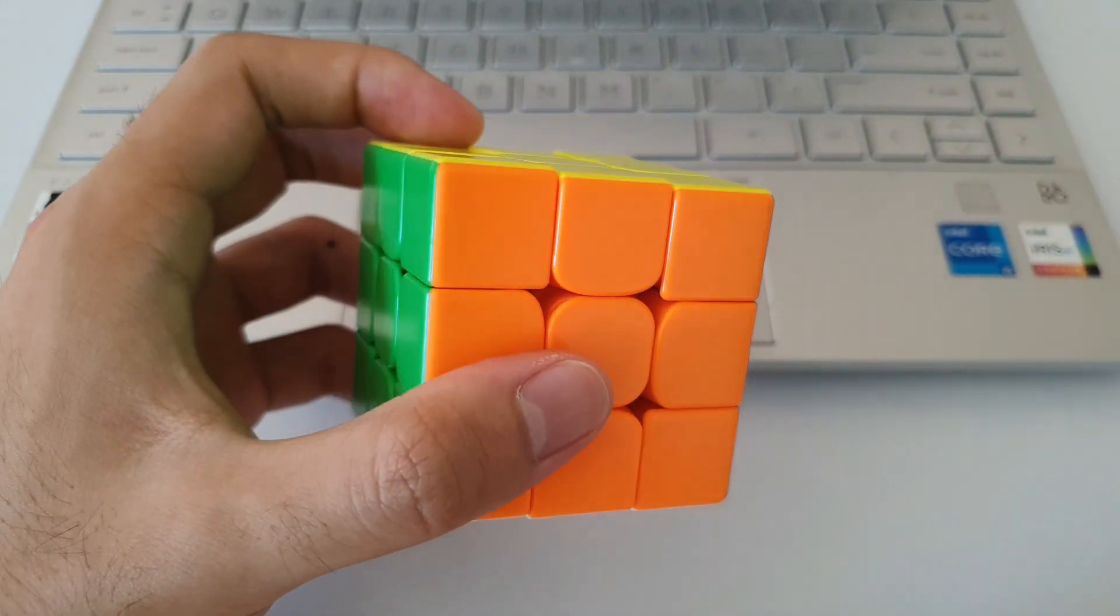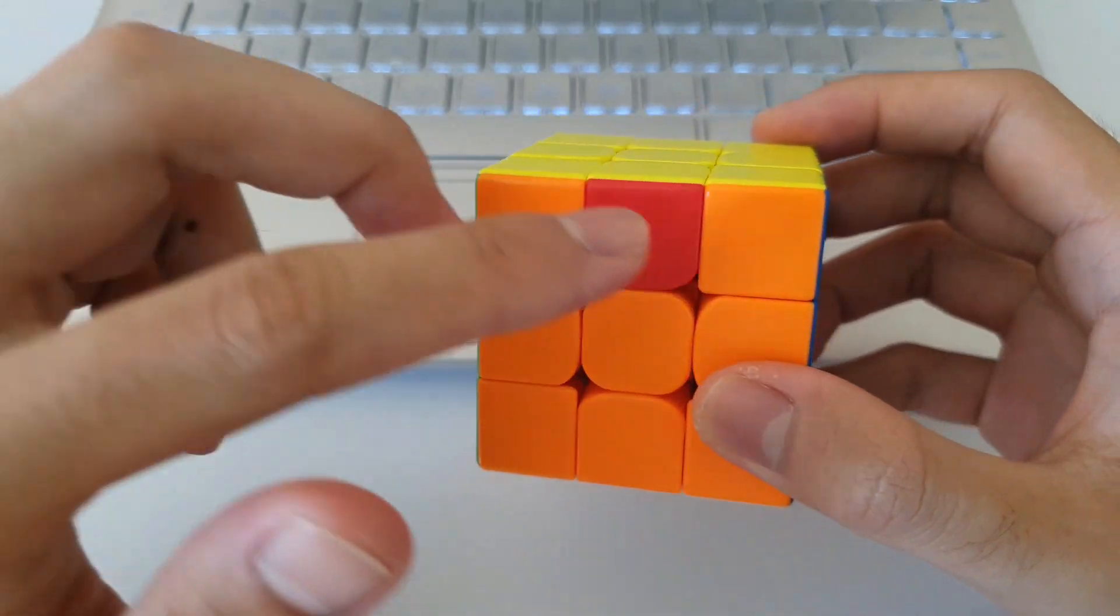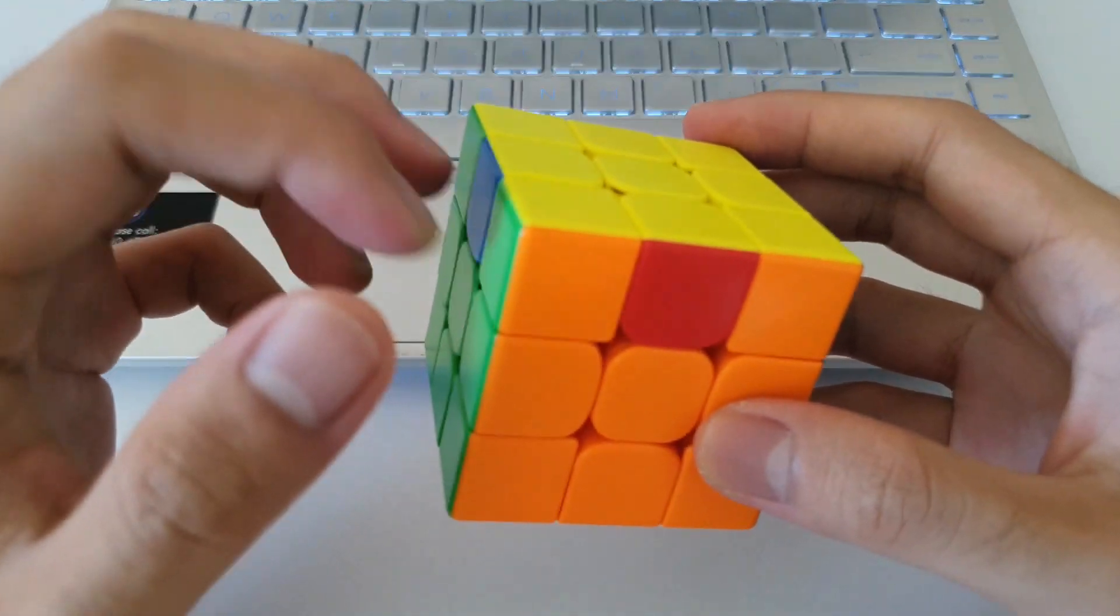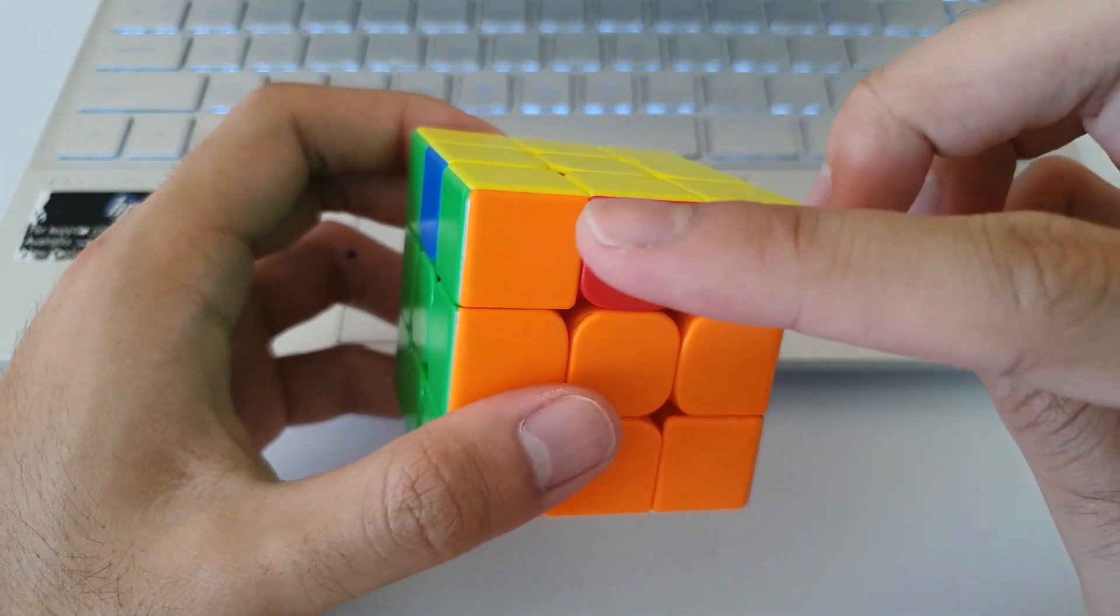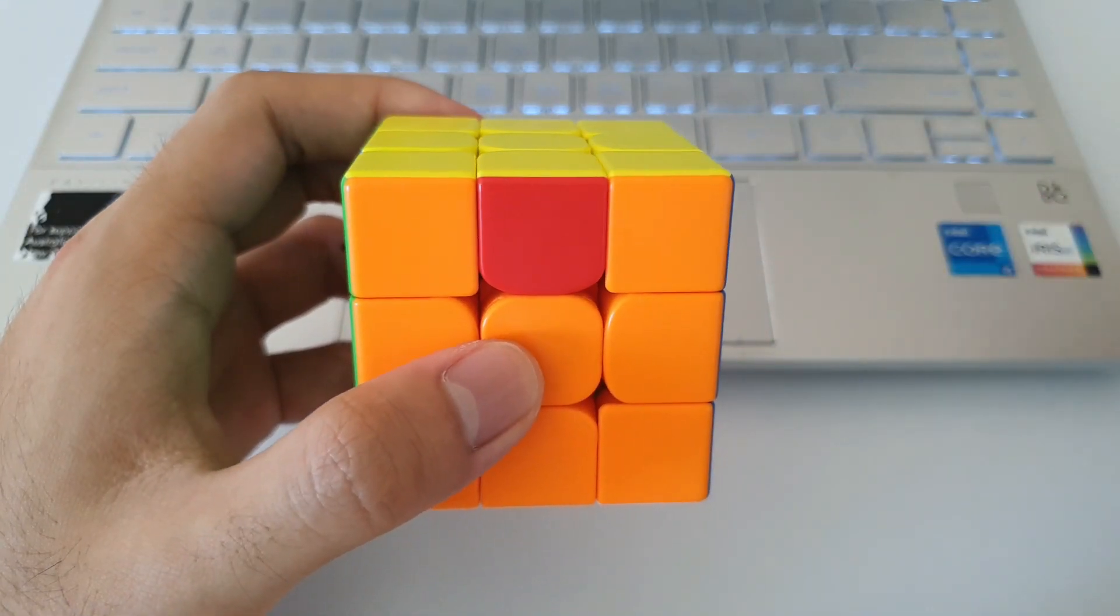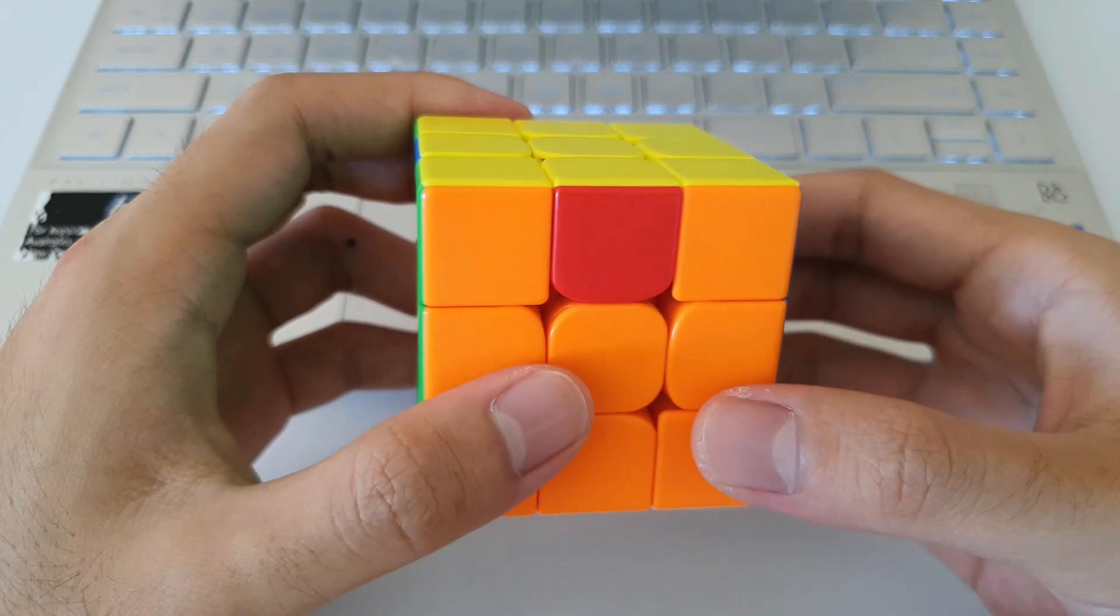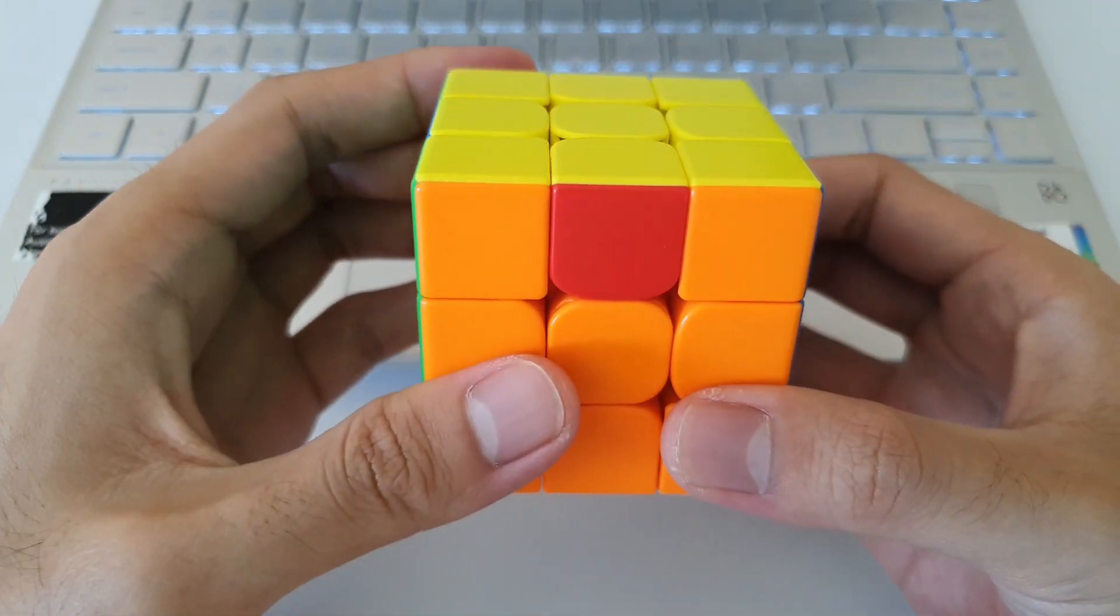So finally, I want to quickly talk about AUF. So AUF for the H perm is just looking at the headlights. So the corner pieces on the H perm don't move during the algorithm. So if you have orange headlights at the front, then once you do the algorithm, this will be the orange side. So in this case, I can recognize pretty much that I don't need an AUF at the end.